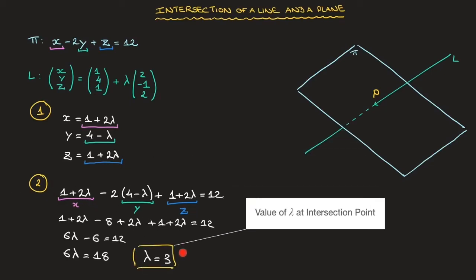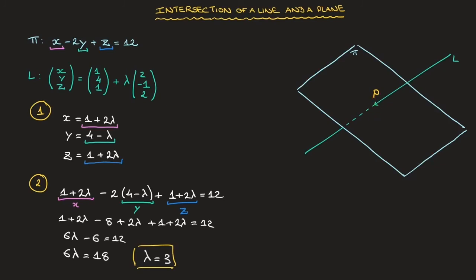And this value, lambda equals 3, is all we need to find the coordinates of the point of intersection of the line and the plane. Indeed, all we have to do now is go back to the line equation and replace lambda by 3 and calculate the coordinates.